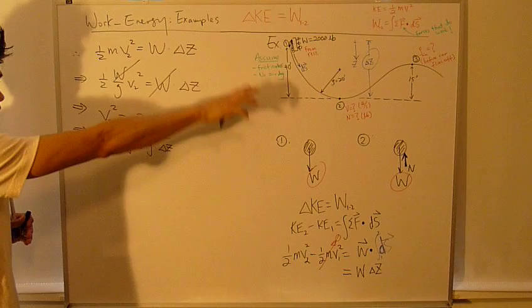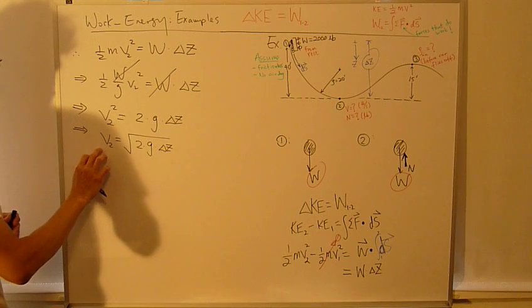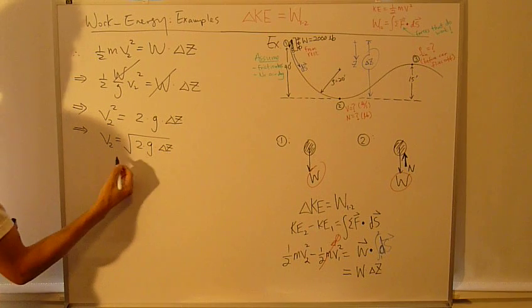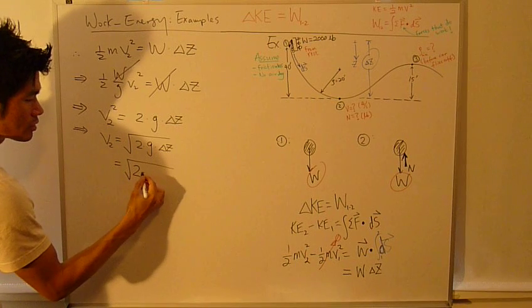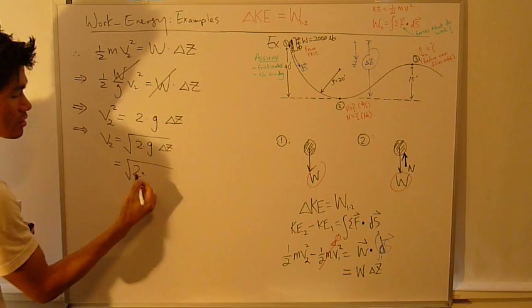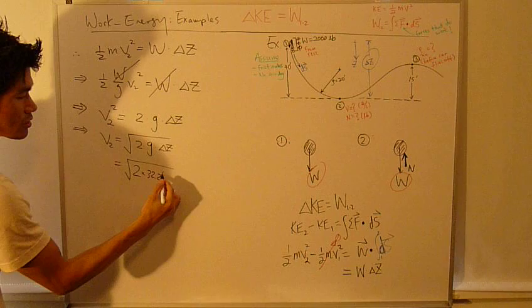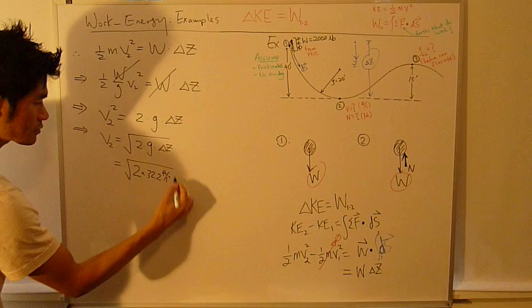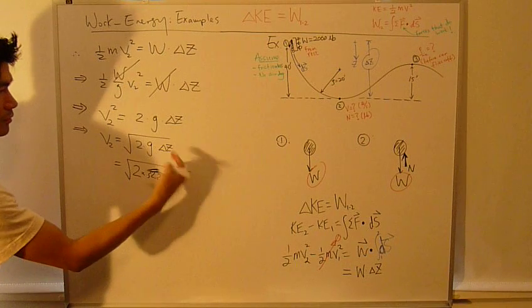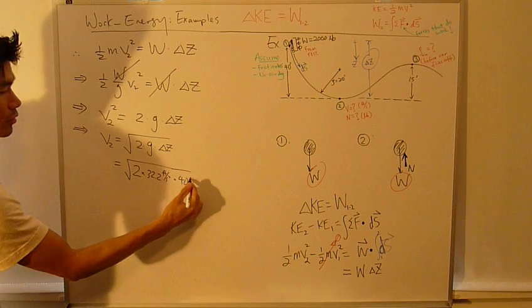You can use this equation to find this velocity at any position if you know the change of height. So, let's plug in numbers. 2 times, keep in mind this is English unit, 32.2 feet per second squared, times delta z, which is 40 feet.